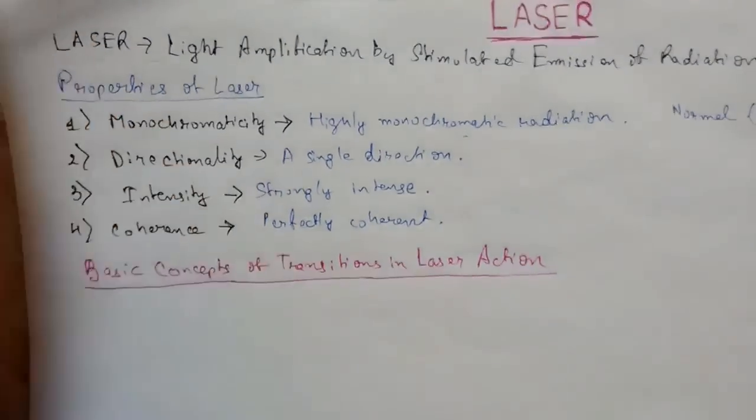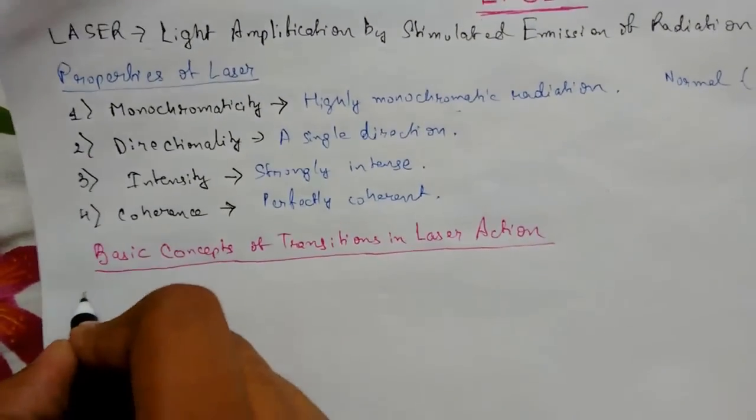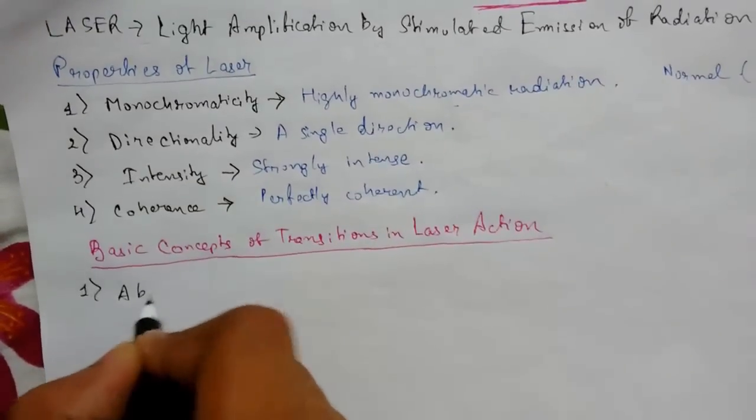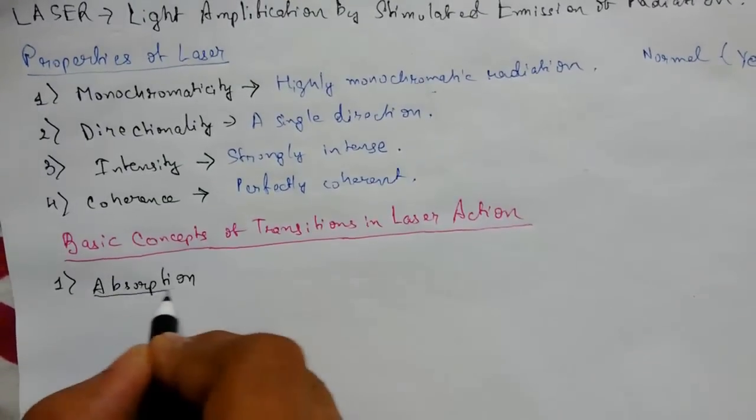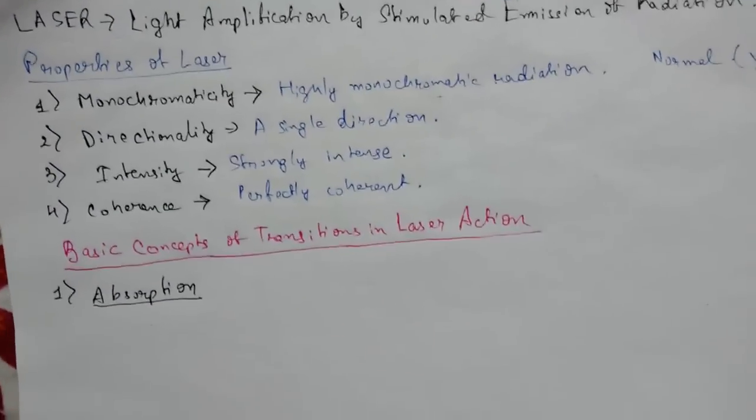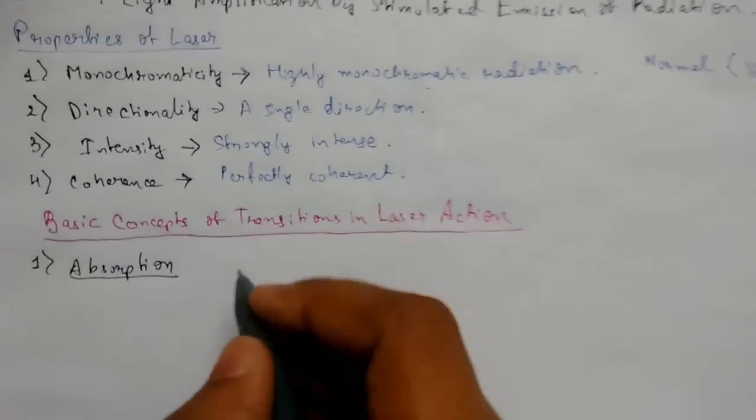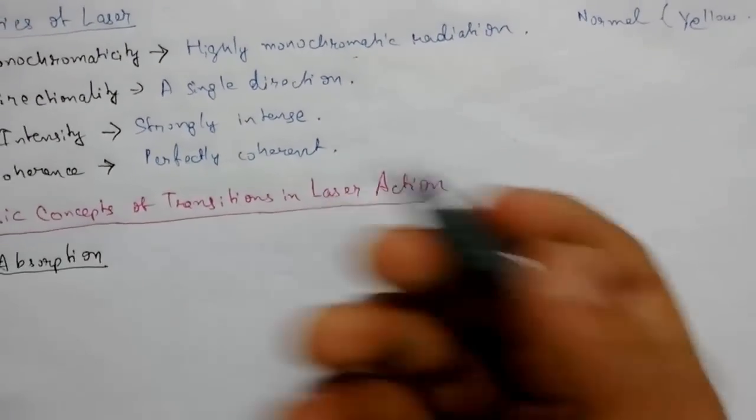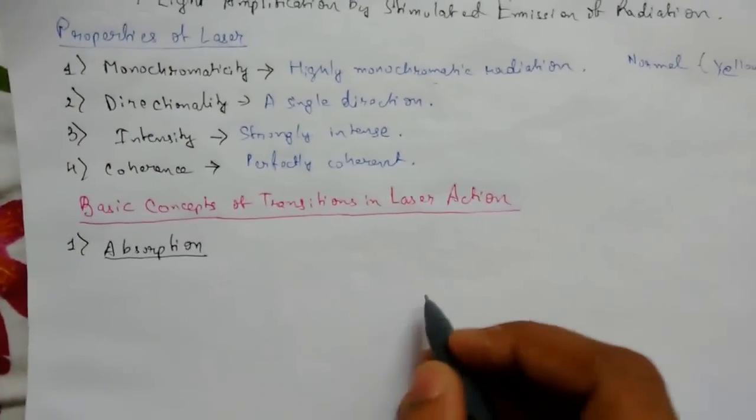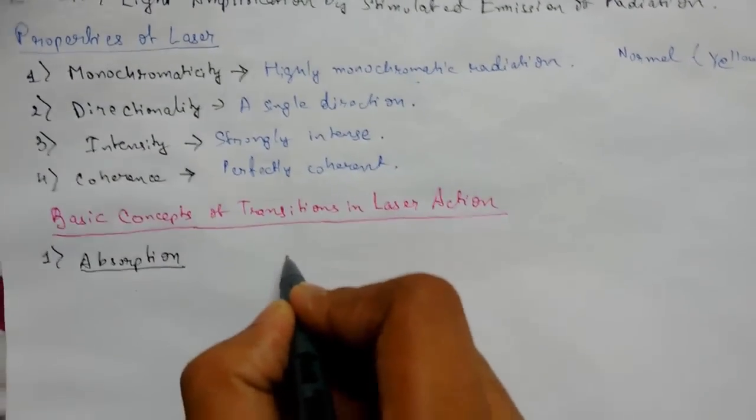To understand basic concepts of laser action, at number one we have absorption. It is a process where an atom in the lower energy state absorbs a photon and moves to the upper energy state. The transition process is known as absorption.